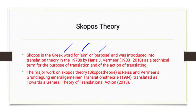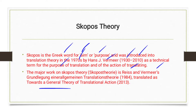The term 'skopos' is a Greek word meaning aim or purpose. It was introduced in the 1970s and is a technical term referring to the purpose of translation. The major work on skopos theory is by Reiss and Vermeer.